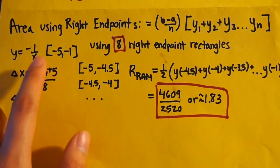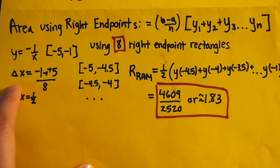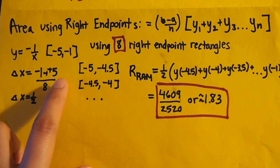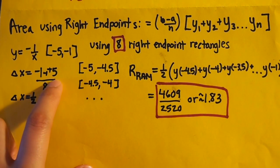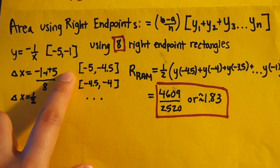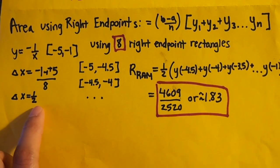So using that information that we know from the top, we can find delta x, being that it's going to be b minus a over n, which means negative 1 minus negative 5. Which you get 4, positive 4, 4 over 8, you'll find that delta x equals 1 half.